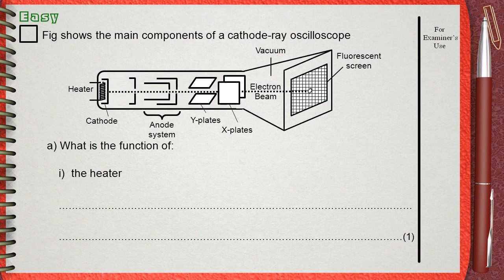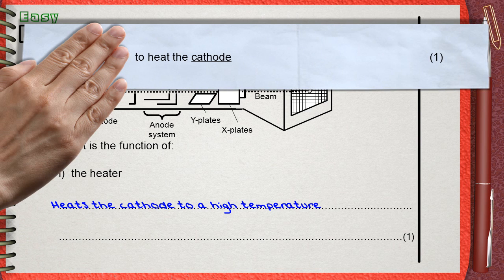So the function of the heater? It heats the cathode to a high temperature, simple answer, and just like what the mark scheme says, to heat the cathode. You can see that cathode is underlined, that's why it must be seen in the answer to get the mark.